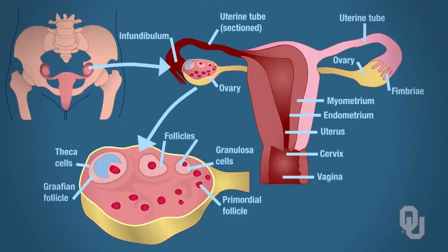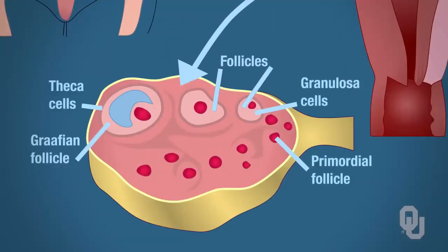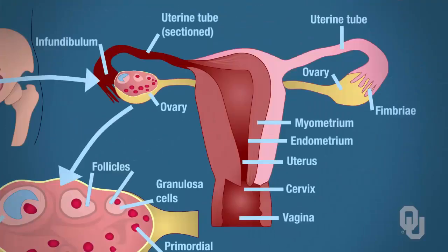When we zoom in on this ovary and look inside of it, what's going on within this ovary is that you have follicles, and within the follicles they will contain developing ovum. Think about the ovaries in terms of the location for the developing or maturing ovum. Once that mature ovum is ready, it will leave the ovary and travel into the uterine tube.